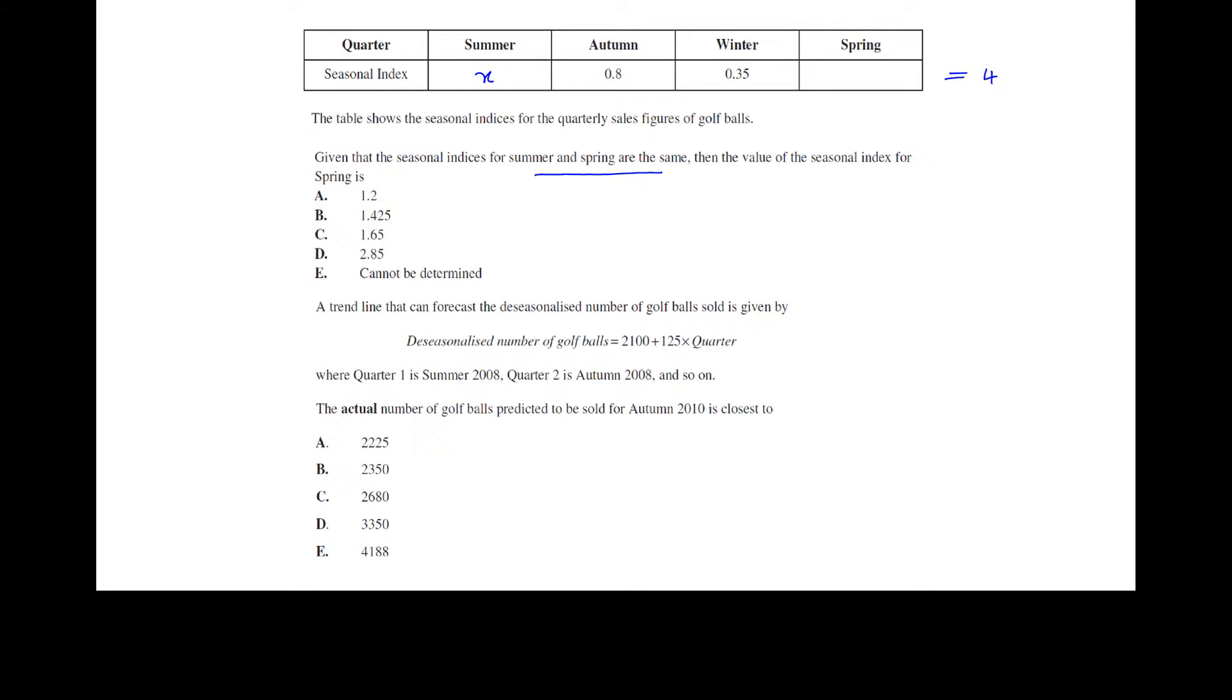And so if we don't know summer and spring, but we know they are the same number, we can say we've got 2x plus 0.8 plus 0.35 and that that will equal four. So when we solve for x, we end up with x equaling 1.425. So that means the index for both summer and spring is 1.425. So the answer is B there.